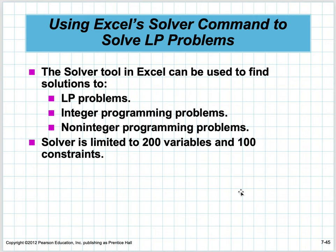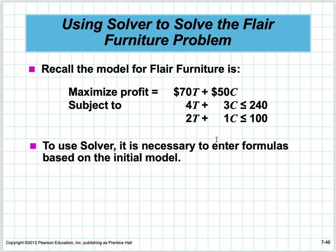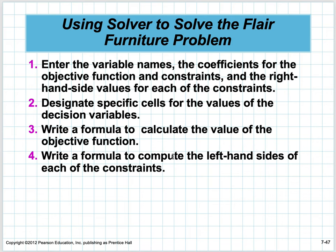Solver is another tool in Excel — the engine behind QM. It handles linear programming, integer programming, and non-integer programming problems. We're using LP only. Solver is limited to 200 variables and 100 constraints, which we will not exceed in this class. To use Solver, enter variable names and coefficients for the objective function on a blank sheet.